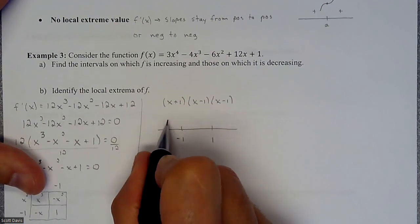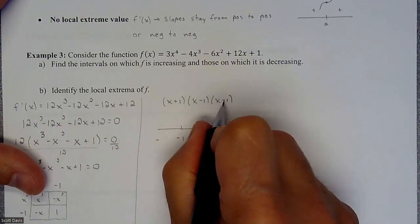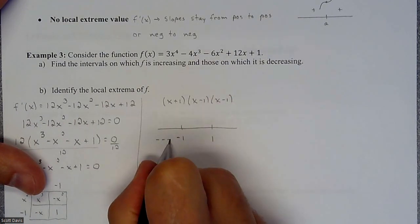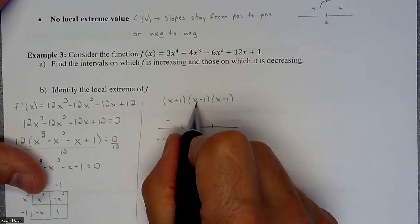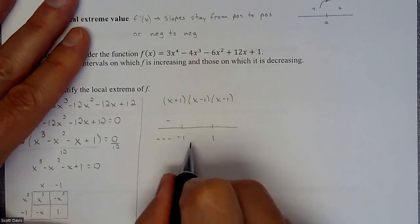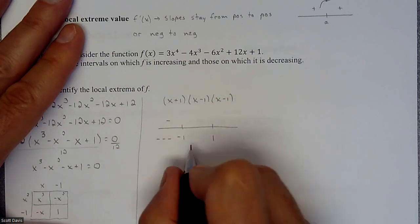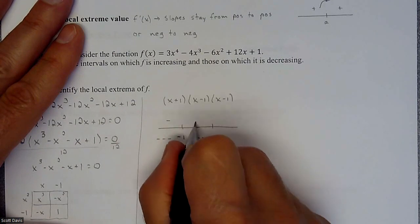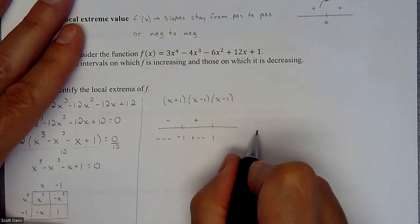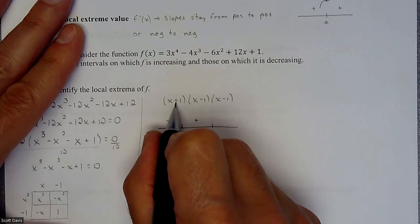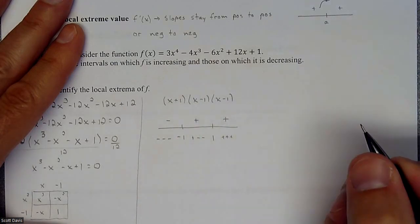If I plug in a value to the left, like negative two, into (x+1)(x-1)(x-1), I get a negative times a negative times a negative, which multiplies to a negative. If I plug in a value between negative one and one, like zero, I get a positive times a negative times a negative, making a positive slope. And beyond one, plugging in two gives a positive times a positive times a positive — so all positive slopes there as well.